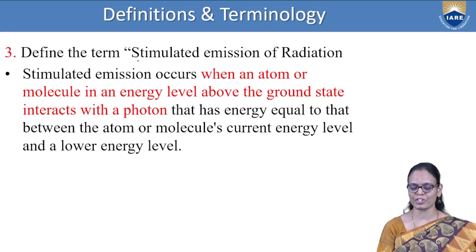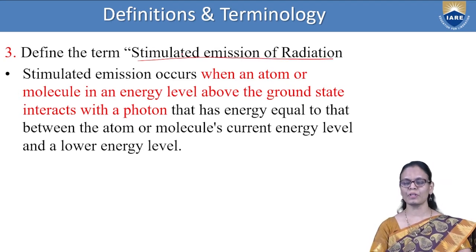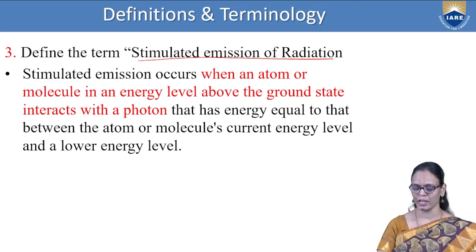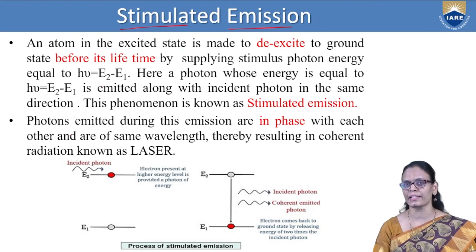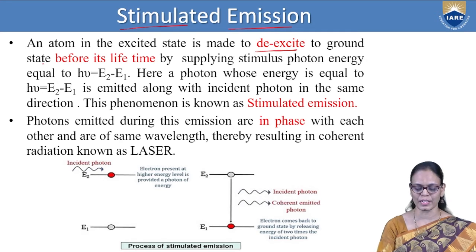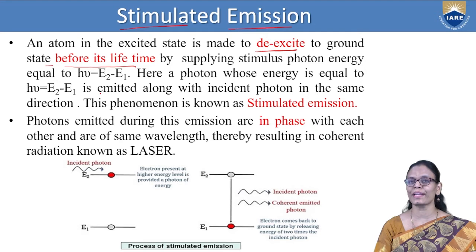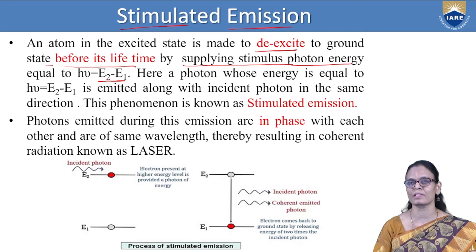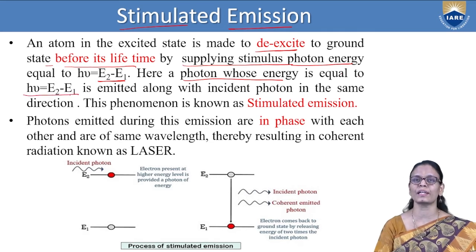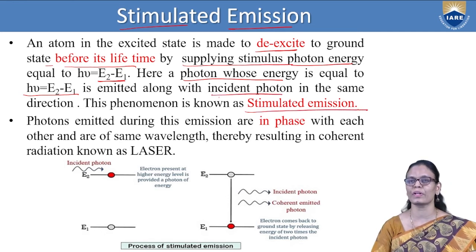Define the term stimulated emission of radiation. An atom which is in the excited state is made to de-excite to the ground state before its lifetime by supplying a stimulus with the help of a photon, and that energy must be equal to the difference between the two energy levels. A photon whose energy equals hν = E₂ − E₁ is emitted along with the incident photon — this is what we call stimulated emission.